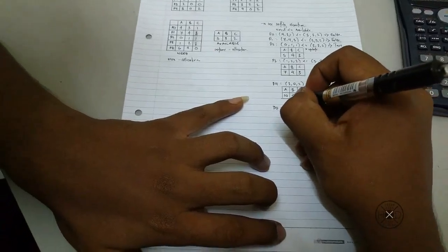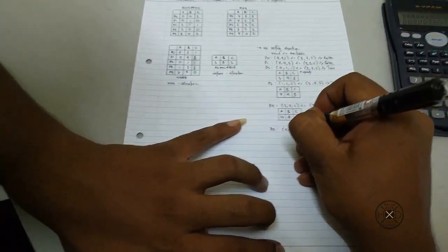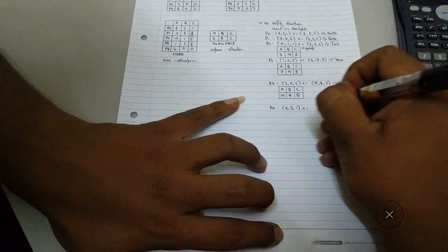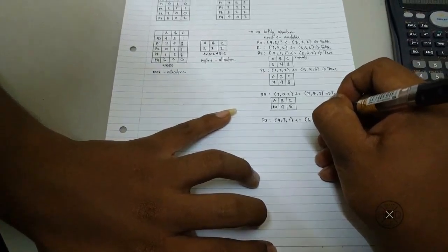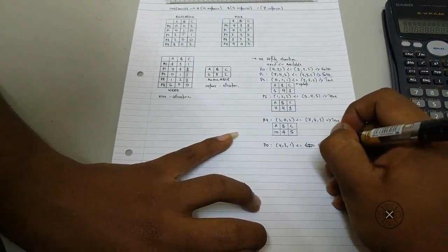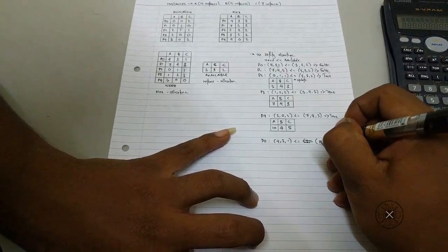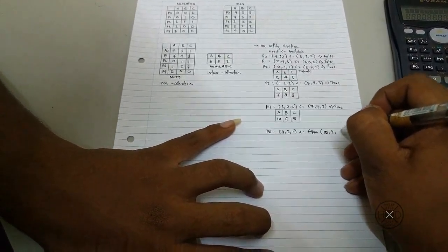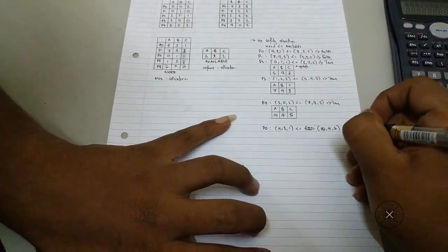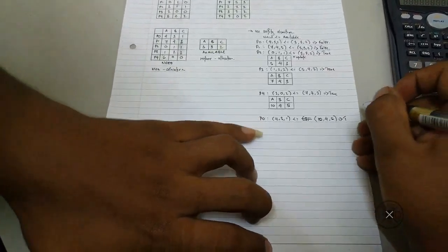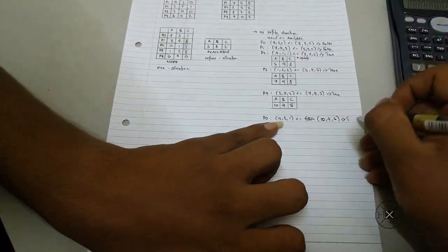So process 0 is 4, 3, 1 less than equal, the new value is 10, 4, 5. So now it will be true because the available table is bigger than the need table.